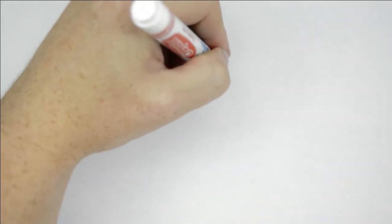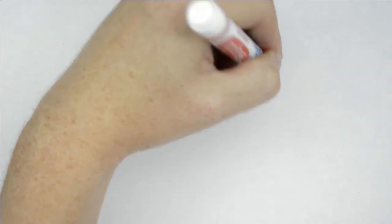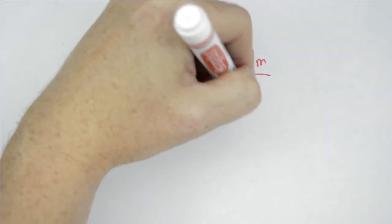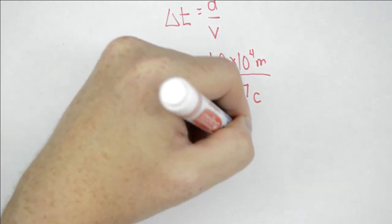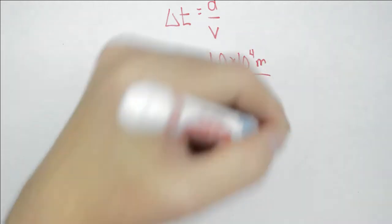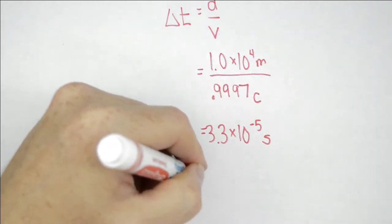So we do a quick calculation. The muon takes a time described by the distance it has traveled divided by the speed: 10 kilometers divided by 0.9997 speed of light, which gives us 3.3 times 10 to the negative 5 seconds.